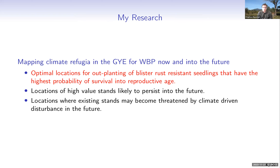My research is driven by the goal of mapping climate refugia in the greater Yellowstone ecosystem for whitebark pine now and into the future. Climate refugia are areas of relatively stable climate, decoupled from the regional climate, where climate-sensitive species can survive when the regional climate becomes unfavorable. There is historical evidence that these areas have allowed climate-sensitive species to survive through periods of rapidly changing climate. Our main goal is to identify optimal locations to outplant blister rust-resistant seedlings where they'll have the highest probability of survival into reproductive age, and to identify locations of high-value stands likely to persist into the future.